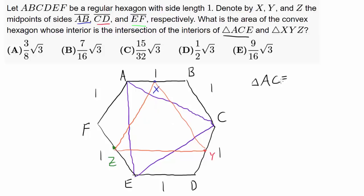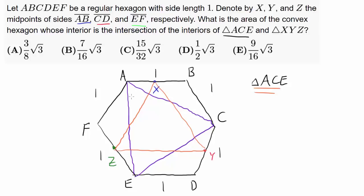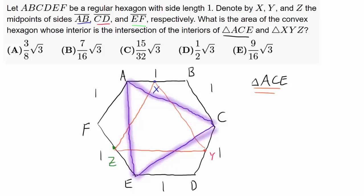In my opinion, triangle ACE is an easier place to start because we have triangle AEF given to us, and using this it's very easy to find the length of side AE, or similarly AC or CE. For XYZ, we'd have to work with a trapezoid, which takes more time. So let's start with triangle ACE and find its area. By symmetry, the three small triangles will have the same area, and we take them away from area of ACE to find our answer.